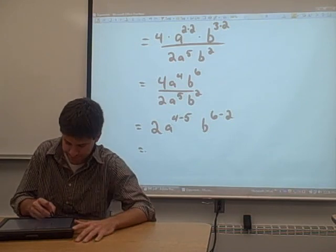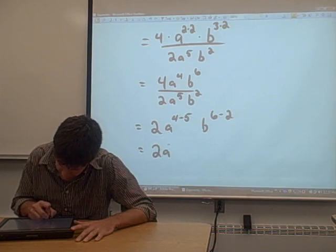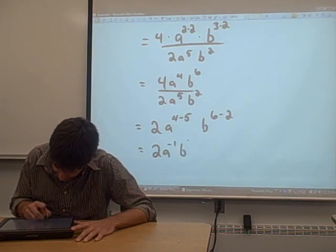Put everything together, just do the subtraction, and we get 2a to the negative 1 b to the 4th.